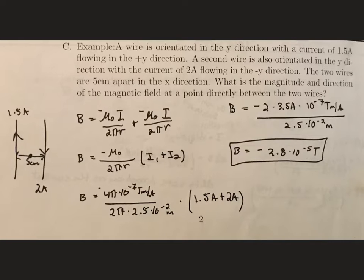A second wire is oriented also in the y direction, but now the current is flowing in the negative y direction with 2 amps. We know that the wires are 5 centimeters apart. We want to know the magnitude and direction of the magnetic field at a point directly between the two wires.